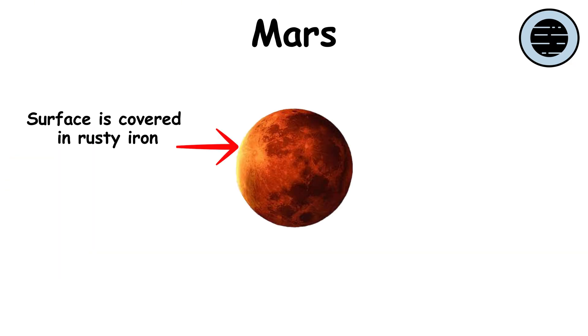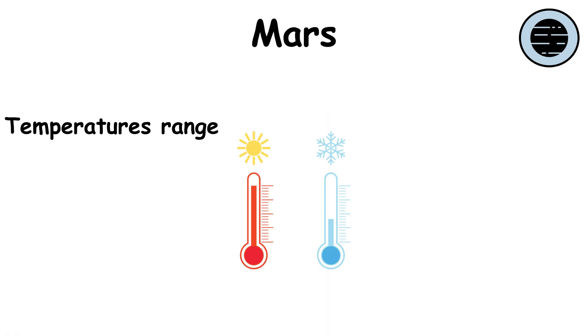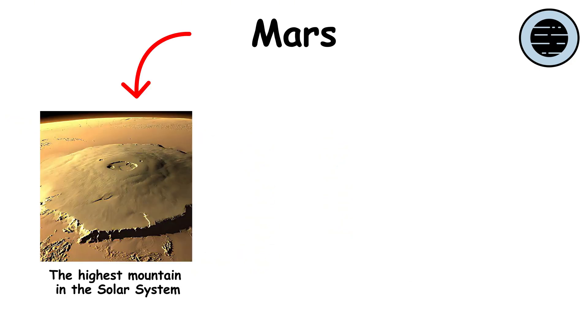Mars is the fourth planet from the Sun, known as the Red Planet. Its surface is covered in rusty iron, and the atmosphere is very thin. Temperatures range from minus 220 degrees Fahrenheit to plus 68 degrees Fahrenheit.